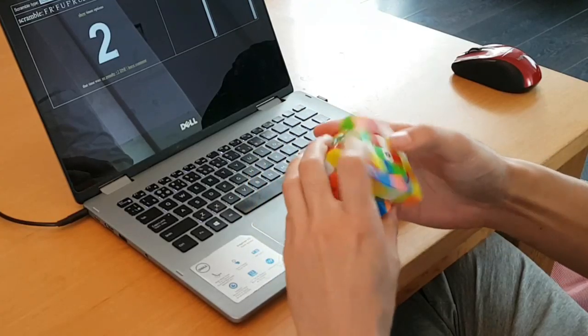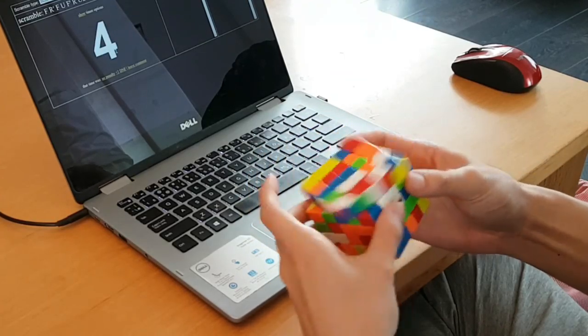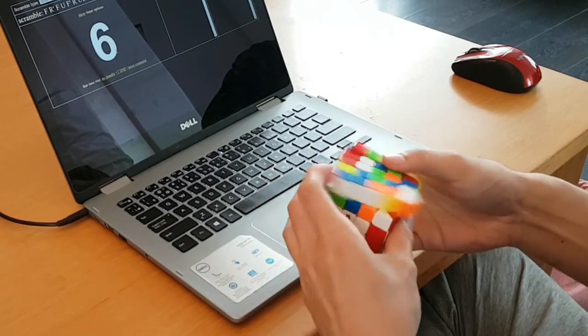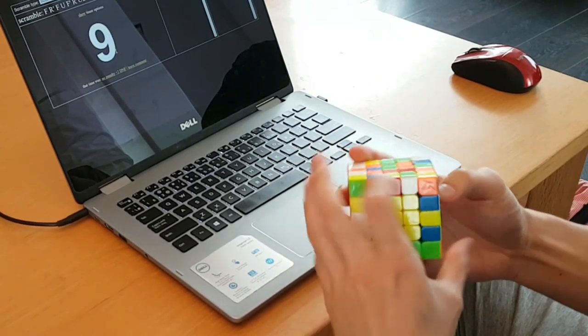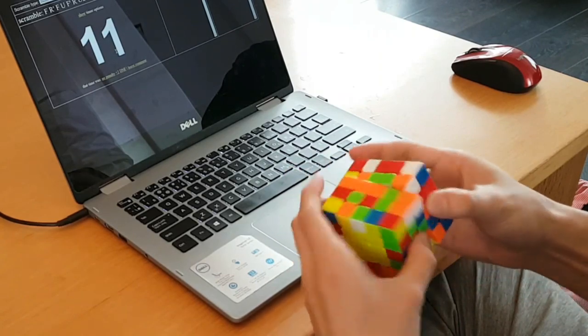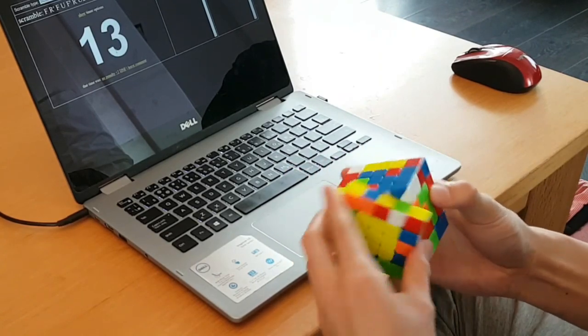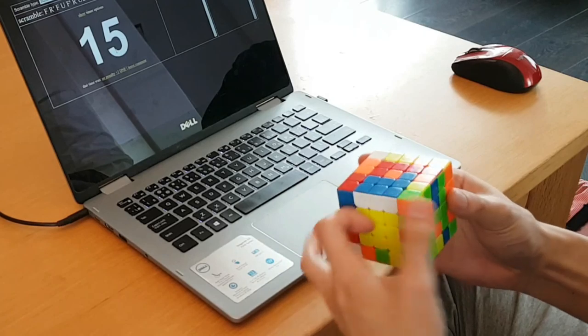So I've been using the Valk 5 for a little while, and I would say the speed is close to the Aochuang GTS, possibly faster, but that probably just depends on what lube you use to set it up. A lot of the performance qualities are similar, but it's faster, and that is better on big cubes. And it catches about a similar amount, maybe a little bit more.